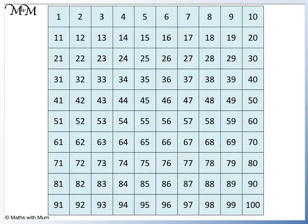Now we'll look at all 14 multiples of 7 from 1 to 100 on the number grid. We'll begin by highlighting the numbers in the 7 times table up to 12 times 7.